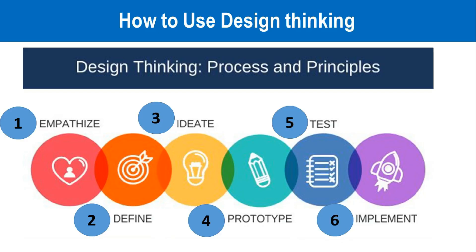So how do we use design thinking to solve problems or develop innovative products? Since design thinking is a process, every process has different steps. In the design thinking process, there are 6 main steps: Step 1 is Empathize, Step 2 is Define, Step 3 is Ideate, Step 4 is Prototype, Step 5 is Test, and Step 6 is Implement.